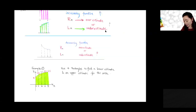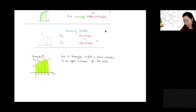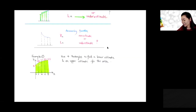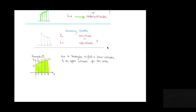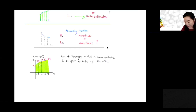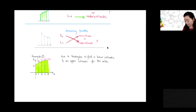Vice versa, if you have a decreasing function and you use the right endpoint, that would be an under-estimate. And using the left endpoint on a decreasing function would be an over-estimate.